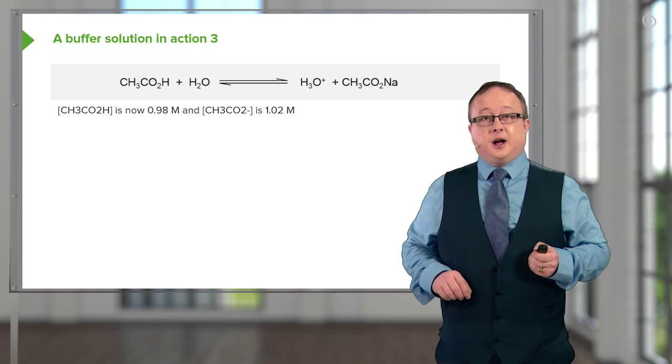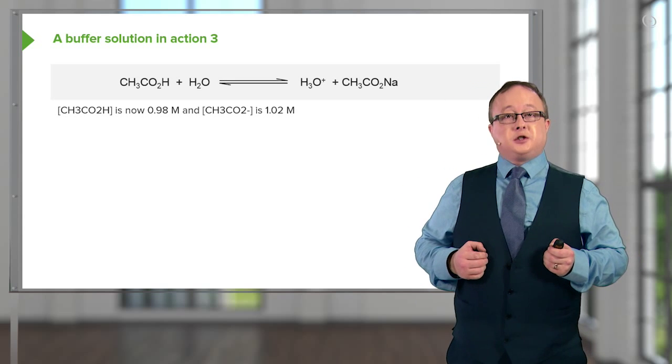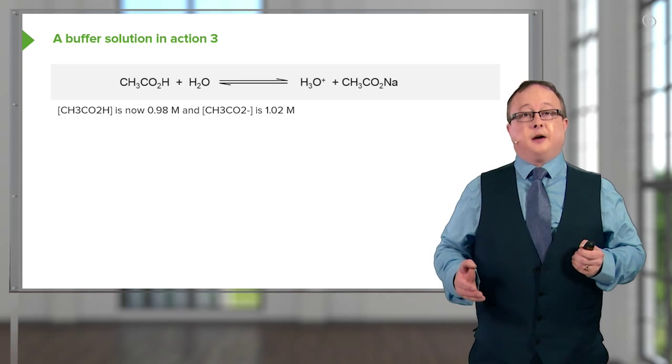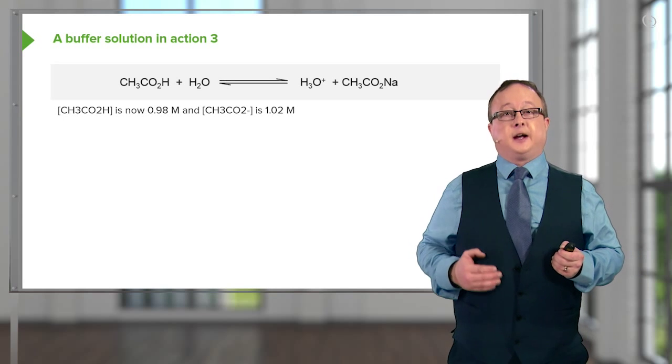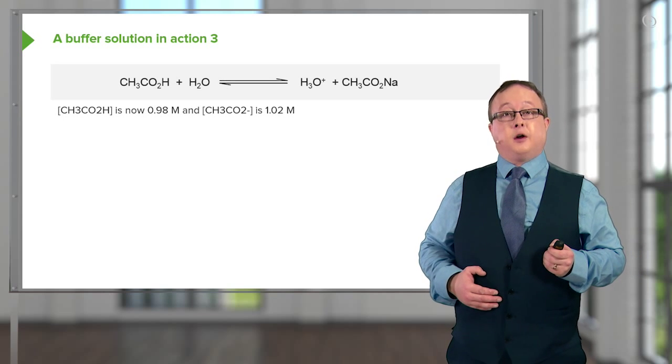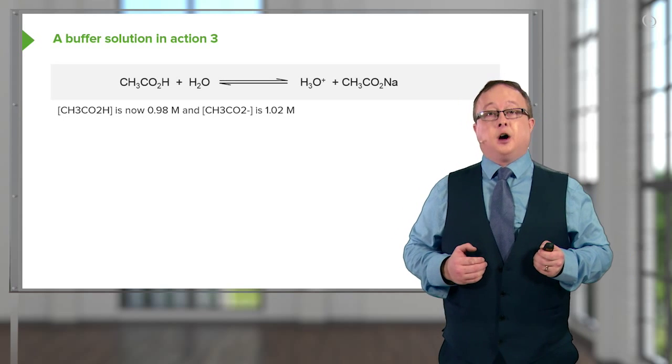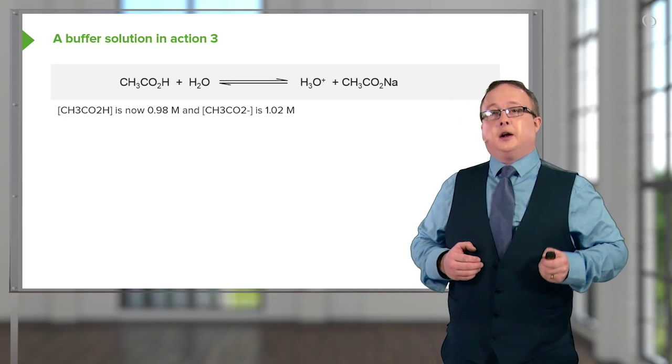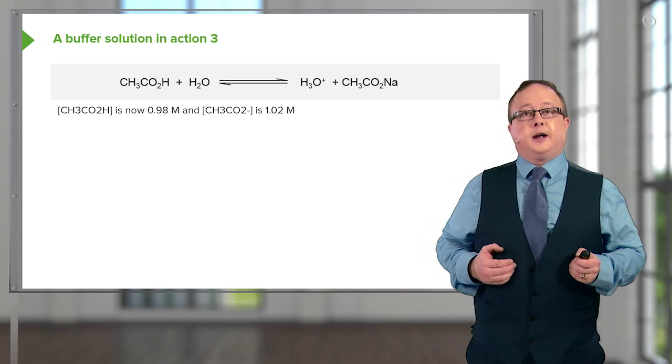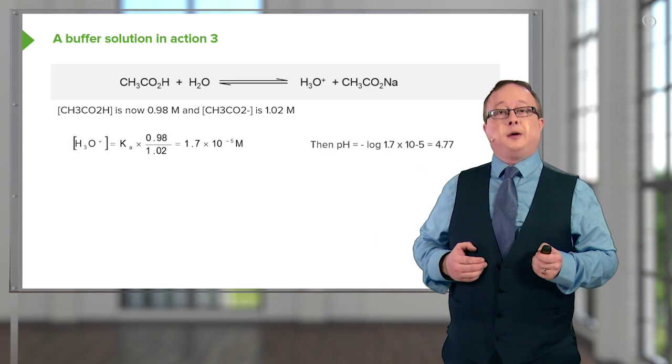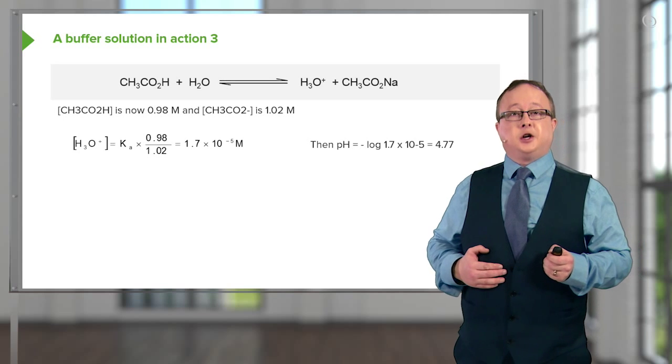So let us apply that. We've neutralized 2%. This results now in a concentration of acetic acid of 0.98 molar and a concentration of sodium acetate of 1.02 molar. Now let's use our knowledge of those concentrations to then determine what the pH is going to be now we've made that change.